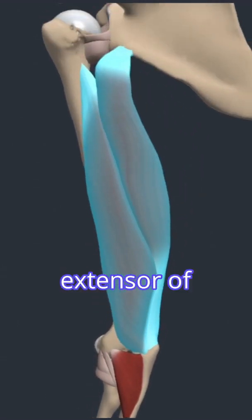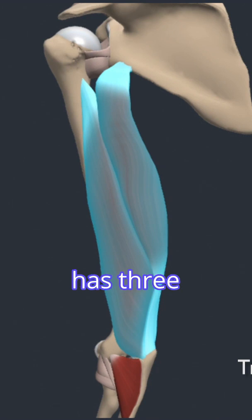The primary extensor of the elbow is the triceps brachii. It has three heads, hence the name triceps, which means three heads.